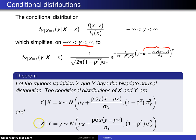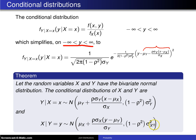The opposite is true when you want the conditional distribution of x given y equals little y. You get this function right here, where the x's and y's are interchanged in all cases, and you get the corresponding population variance.